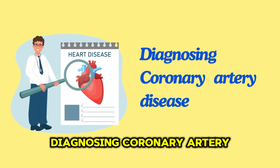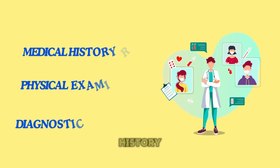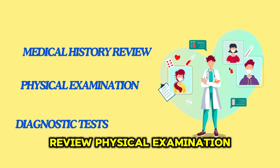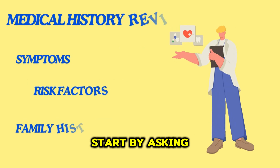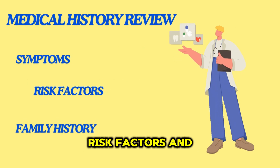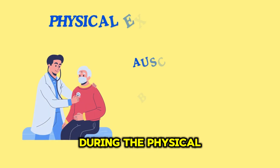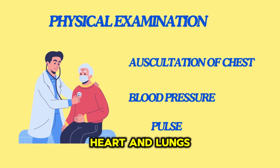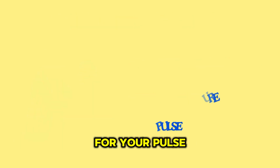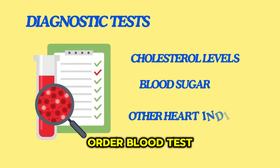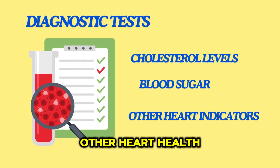Diagnosing coronary artery disease typically involves a combination of medical history review, physical examination, and diagnostic tests. Your doctor will start by asking about your symptoms, risk factors, and family history of heart disease. During the physical exam, your doctor will listen to your heart and lungs, check your blood pressure, and feel for your pulse. They may also order blood tests to check your cholesterol levels, blood sugar, and other heart health indicators.